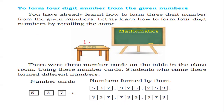We are given the digits 5, 3, 7. Using these 3 numbers we can form 6 different numbers: 537, 375, 756, 357, 735, and 573. Among these numbers, which one is the largest and which one is the smallest? 357 is the smallest number and 756 is the biggest number.